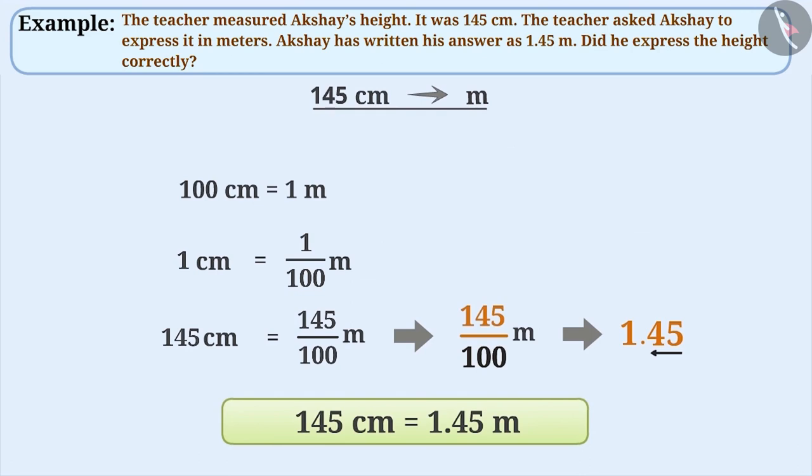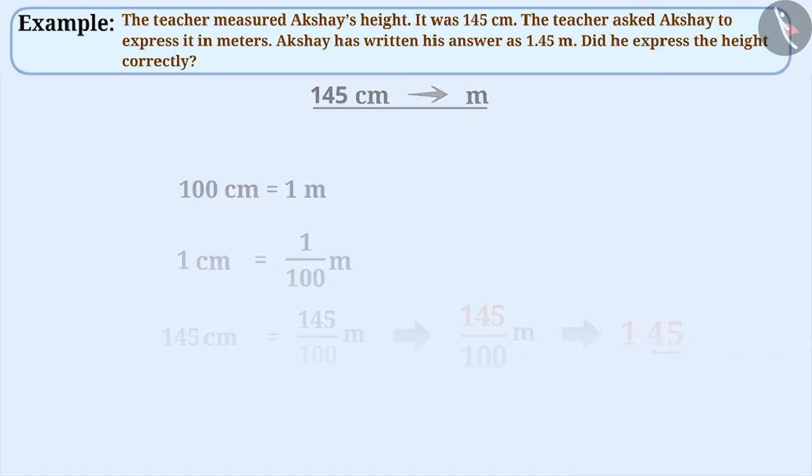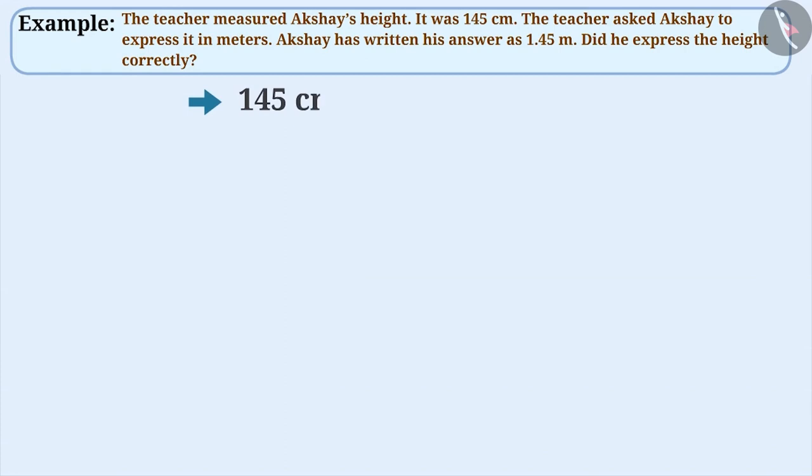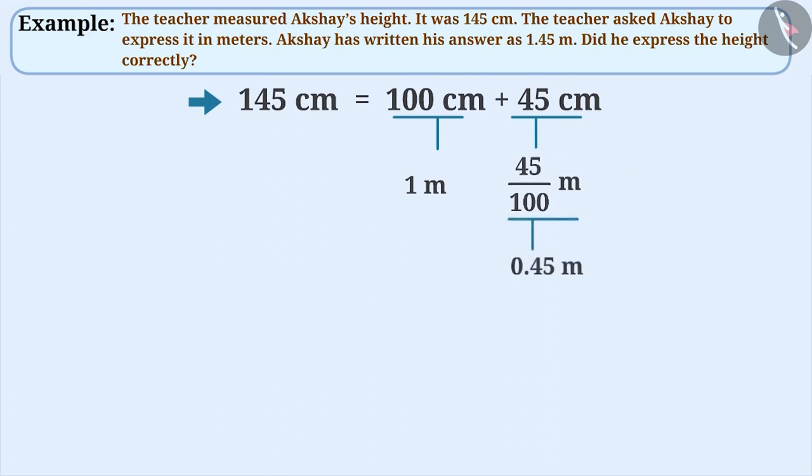Let us understand this in another way. 145 centimeters is equal to 100 centimeters plus 45 centimeters. Since 100 centimeters equals 1 meter and 45 centimeters equals 45 by 100 meters, that is 0.45 meters.